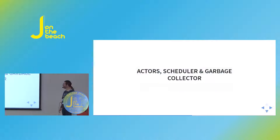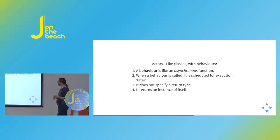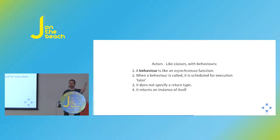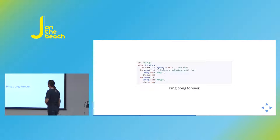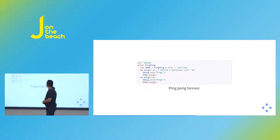Actors are like classes with behaviors. For those using Elixir, Erlang, or Akka, you're already familiar with this. They're asynchronous — they don't execute immediately when called, they're scheduled for later. The Pony scheduler environment is similar to Erlang's — typically a scheduler per core. Here's a simple PingPong actor: on construction it assigns itself a reference, and when you call Ping or Pong behaviors, they call the respective other behavior. This runs forever until you Control-C the environment.